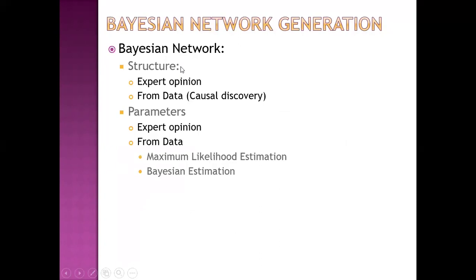How to generate a Bayesian network? How to generate the structure of a Bayesian network? We have two options: one is expert opinion, and the other is identification of structure from data, which is also known as causal discovery. For parameters, we can generate them either from expert opinion or from data. From data, we can identify the parameters by using maximum likelihood estimation and Bayesian estimation.